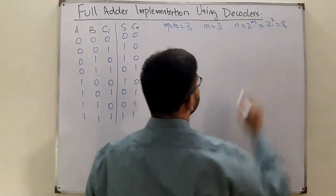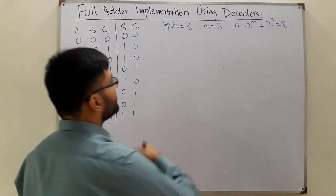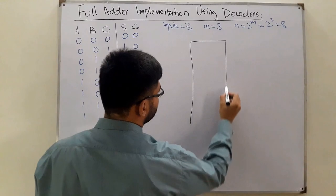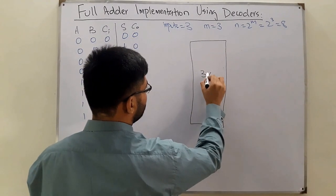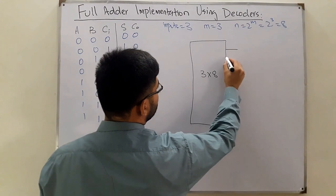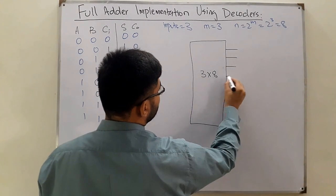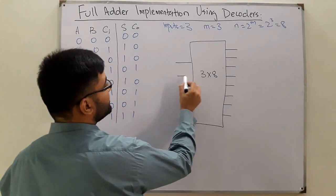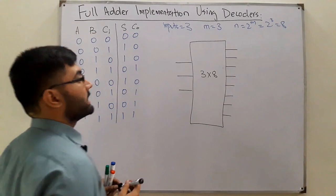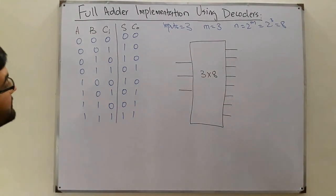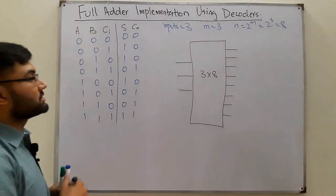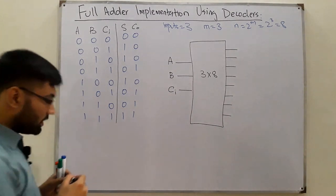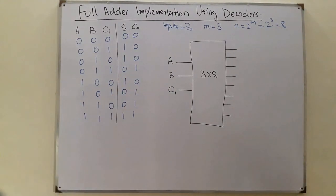So the decoder would be like this—this would be the 3 cross 8 decoder which has 0, 1, 2, 3, 4, 5, 6, and 7. And then you have 1, 2, and 3 input lines, so the 3 input lines would be your 3 inputs, that is A, B, and your carry input.